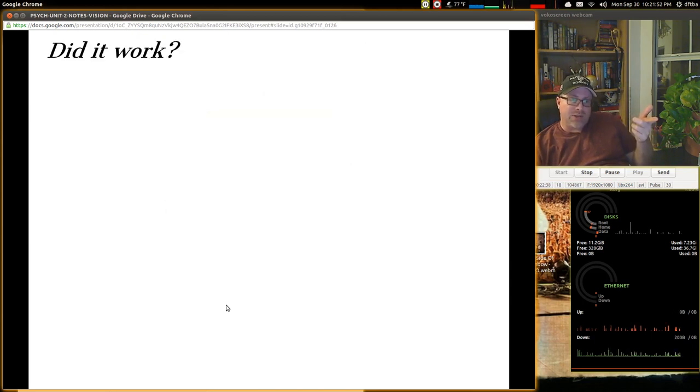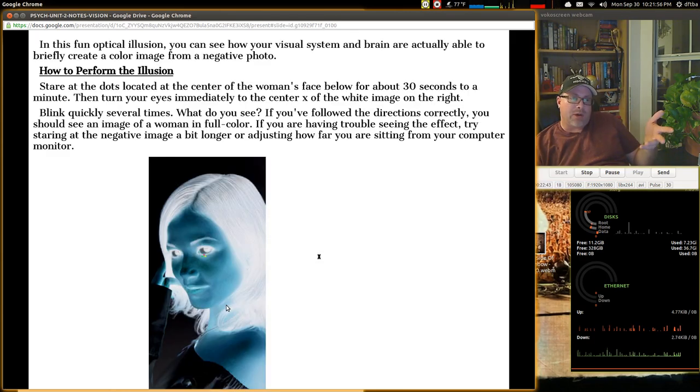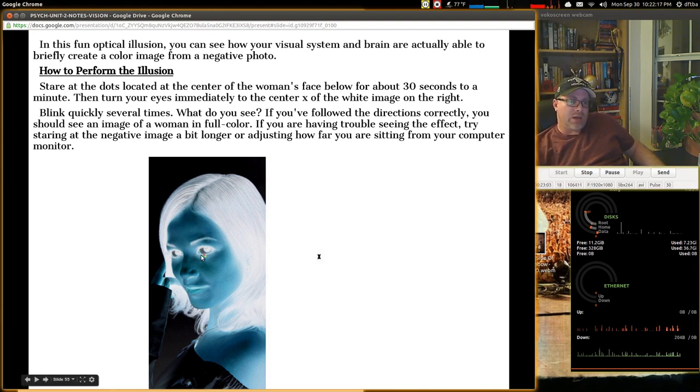Okay. Did it work? You should be able to see what looks like a green shamrock. So, good luck to you. Here's the last one I have for you. This is a pretty fun optical illusion. This is really cool. You can see how your visual system and the brain are actually able to briefly create a color image from a negative photo. So, how do you perform this illusion? You stare at the dots located at the center of the woman's face. And there's one right here. There's three dots. Red, yellow, and green.